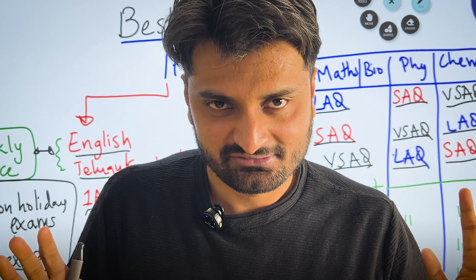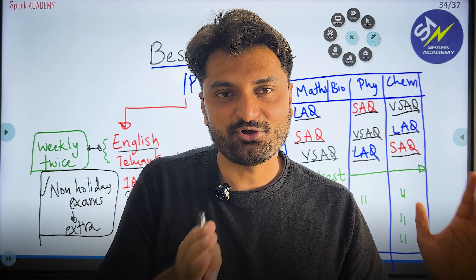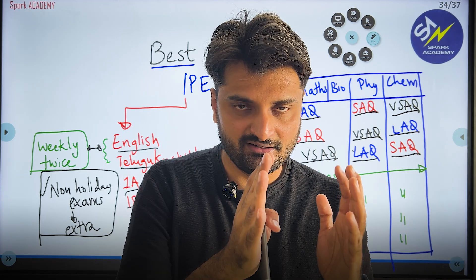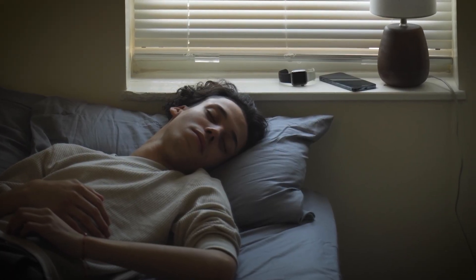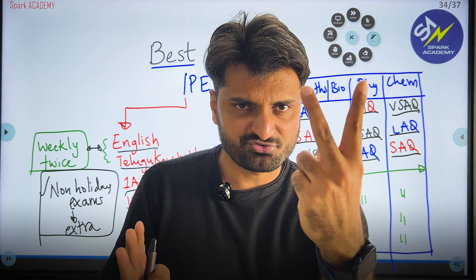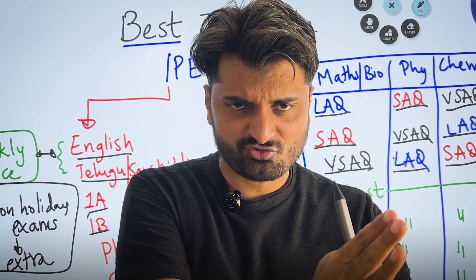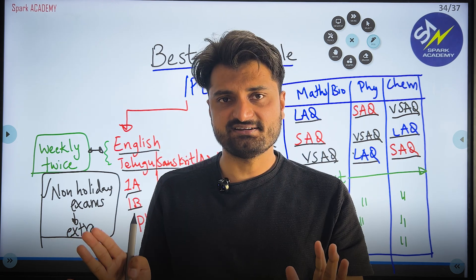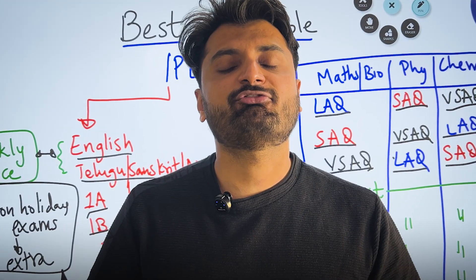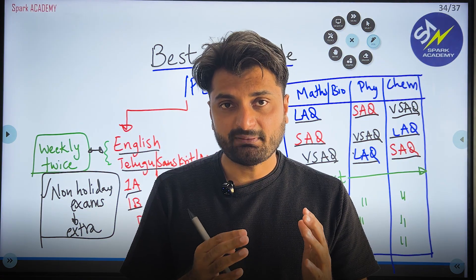Whether you are an early morning studier or an evening studier, preferably wake up at 5:30 and be ready by 6. Study from 6 to 9 — covering two subjects in the morning slot. Then study another three hours in the evening slot. Three plus three hours, that is more than enough to kickstart your IP preparation.